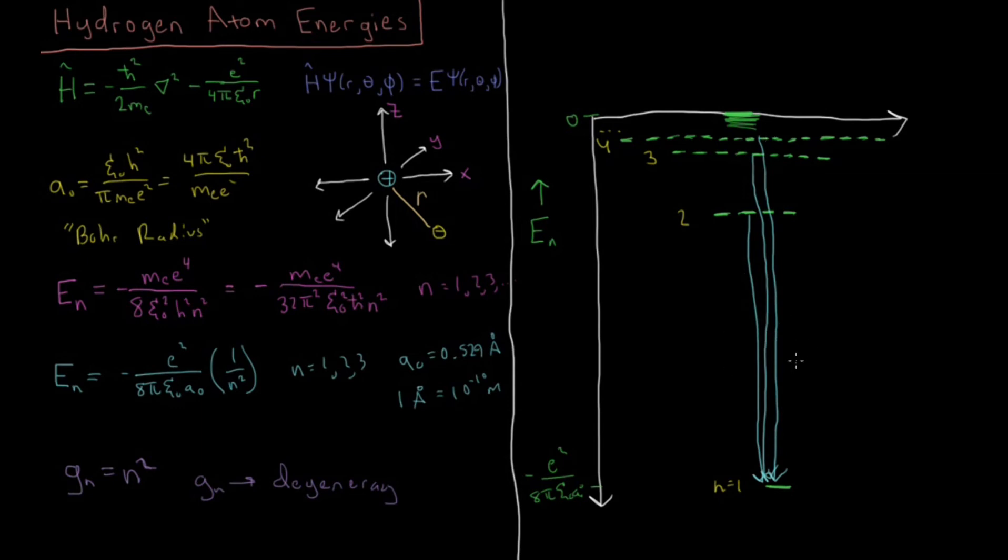This would actually be equivalent to the Lyman series that we originally saw when looking at the Rydberg formula way back in the very early part of this playlist. And this was in the ultraviolet region of the electromagnetic spectrum. So that tells you the scale of how big these energy differences are.